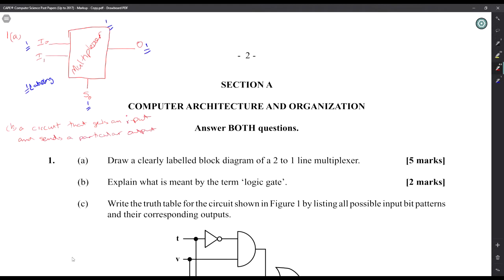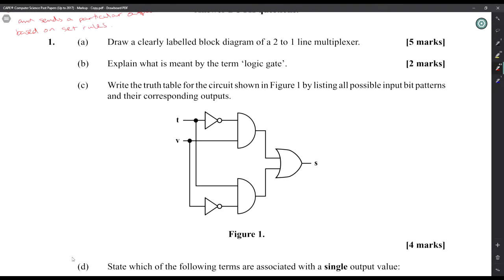Write the truth table for the circuit shown in Figure 1 by listing all possible input bit patterns and their corresponding outputs. You're going to have to analyze the gates. You have the two inputs T and V, the output is S, but before that happens you have multiple gates to go through. We clearly have a NOT T and V coming in there, and then we have a normal T and a NOT V coming in.